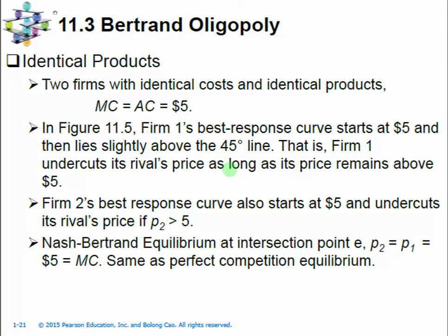In Bertrand oligopoly competition, we still consider the non-cooperative behavior between the oligopoly firms. The key difference between the Bertrand model and the Cournot model is that now instead of the firms deciding on the quantity to set, they will make a price decision. That means one competitor will view the price set by the other competitor as given, and then based on that belief, this firm will decide at what price it will offer its product.